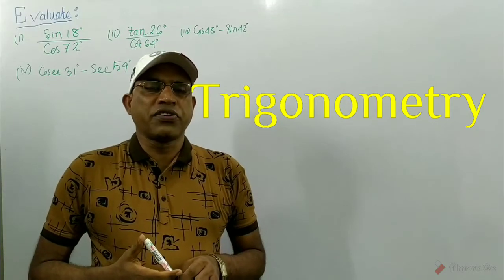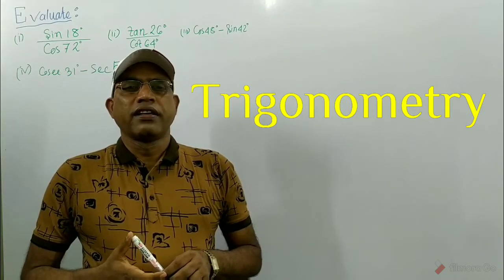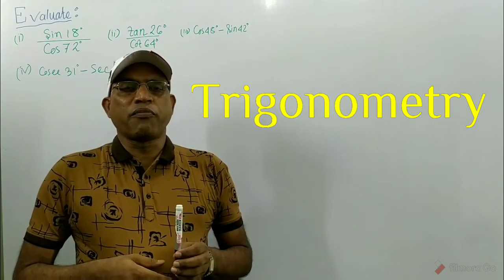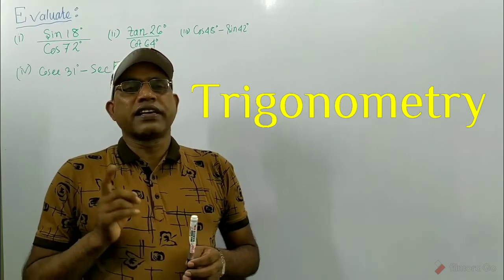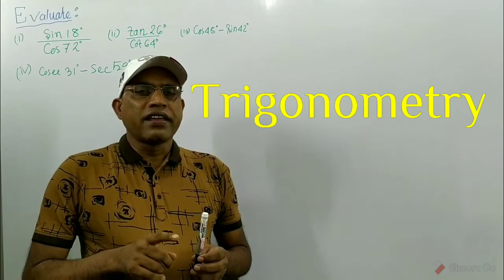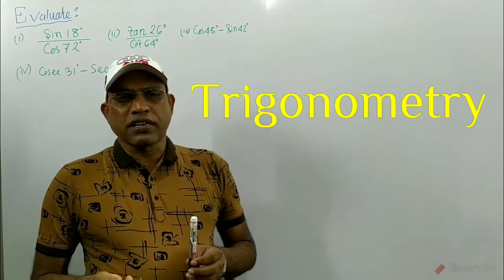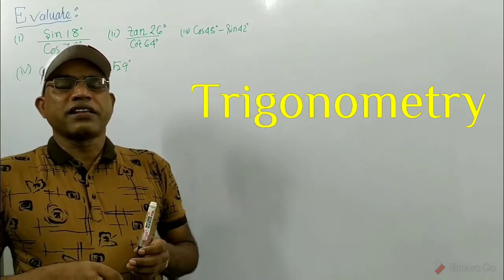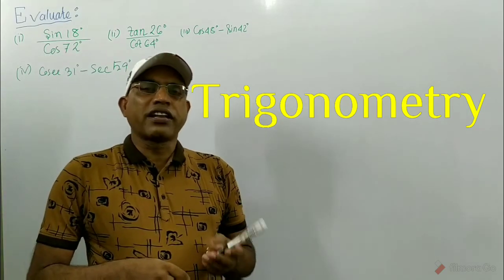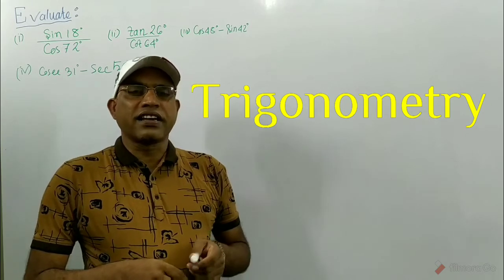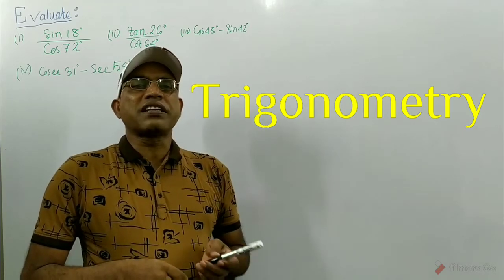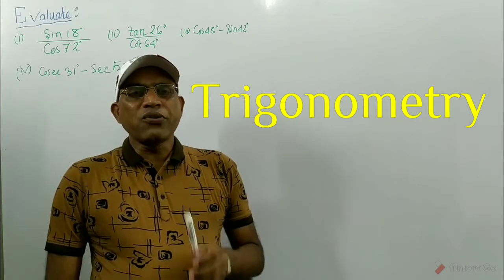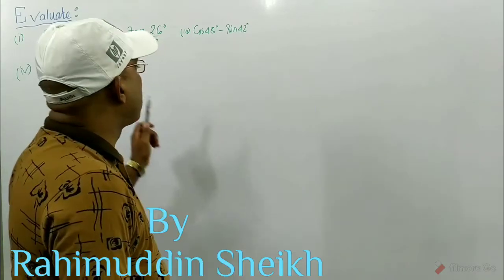So, students, in the last video, video number 13, we were given the trigonometric ratios of complementary angles. These are: sin(90 - θ) = cos θ, cos(90 - θ) = sin θ, tan(90 - θ) = cot θ, cot(90 - θ) = tan θ, sec(90 - θ) = cosec θ, and cosec(90 - θ) = sec θ. By using these, we want to solve this problem.